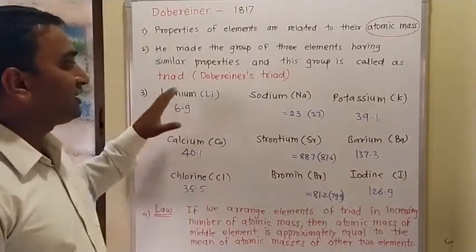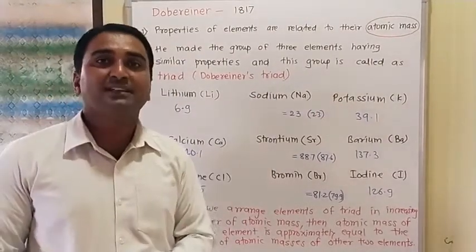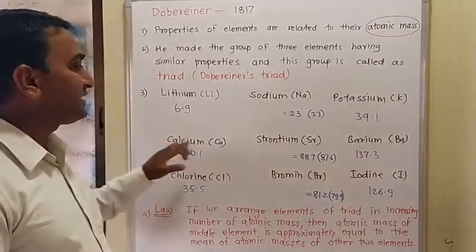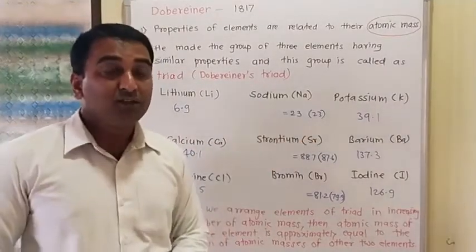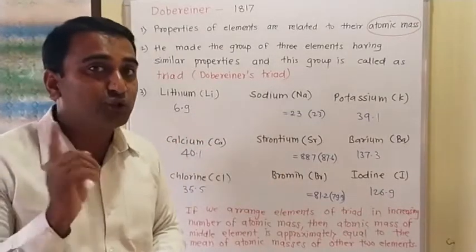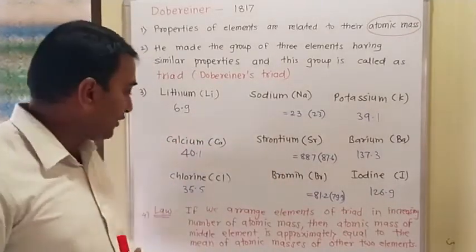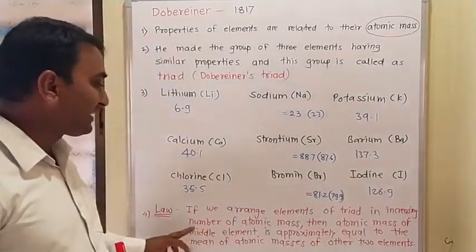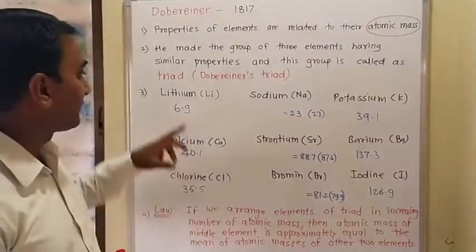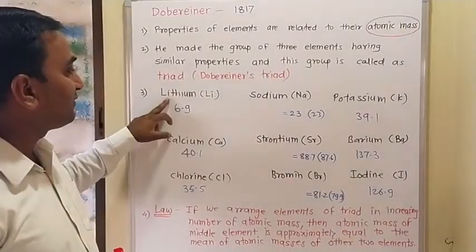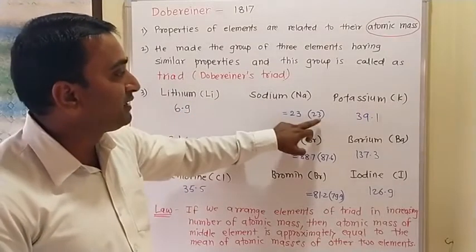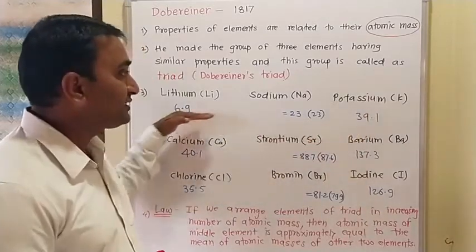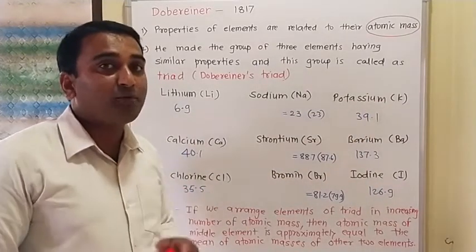He also showed one law. If we arrange elements of a triad in increasing order of atomic masses, the atomic mass of the middle element is approximately equal to the mean of the other two. For example: lithium's atomic mass is 6.9, sodium is 23, and potassium is 39.1. Let A = lithium, B = sodium (middle), C = potassium.